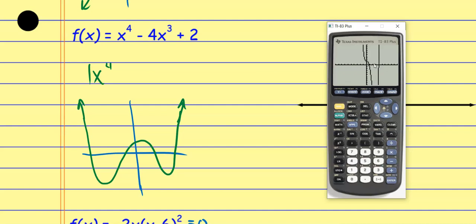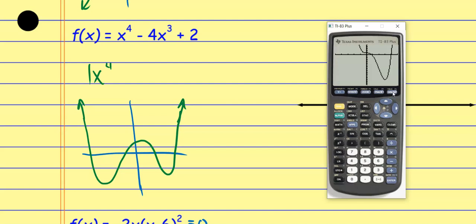I can't really see all the details — I need to go a little bit lower. I don't want to use the zoom buttons because they'll mess up the x values. I want to adjust the Window. I can afford to lose some x values — I'll go negative 5 to positive 5 — but I need to go lower on the y minimum, so I'll change that to negative 30. I hit graph and now I can see this thing a little bit clearer.